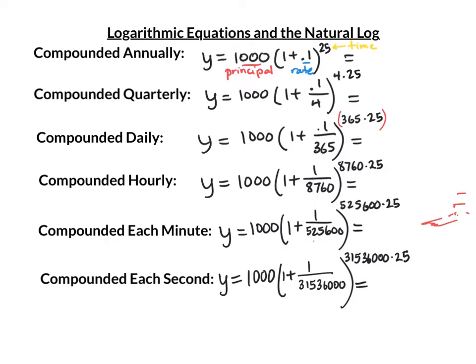Notice the next intervals: there are about this many minutes in a year, raised to that power times 25. And if compounded each second, there are this many seconds in a year to that power times 25. It turns out the more times you compound, the closer you get to a special number representing continuous growth — growth that's not added once a month or once a second, but truly continuous.